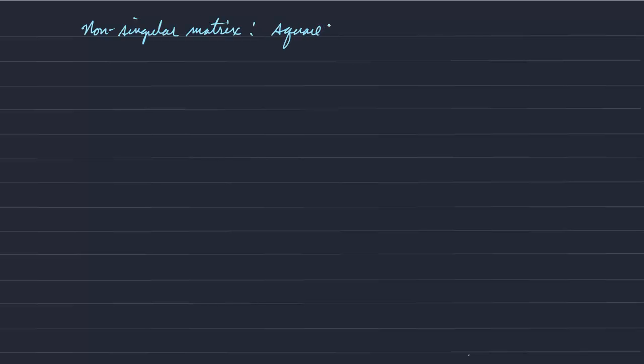I may not have mentioned that in the last video. But a non-singular matrix is square and all rows and columns are linearly independent. Or another way of saying that is the rank is equal to its dimension. The rank is equal to n.